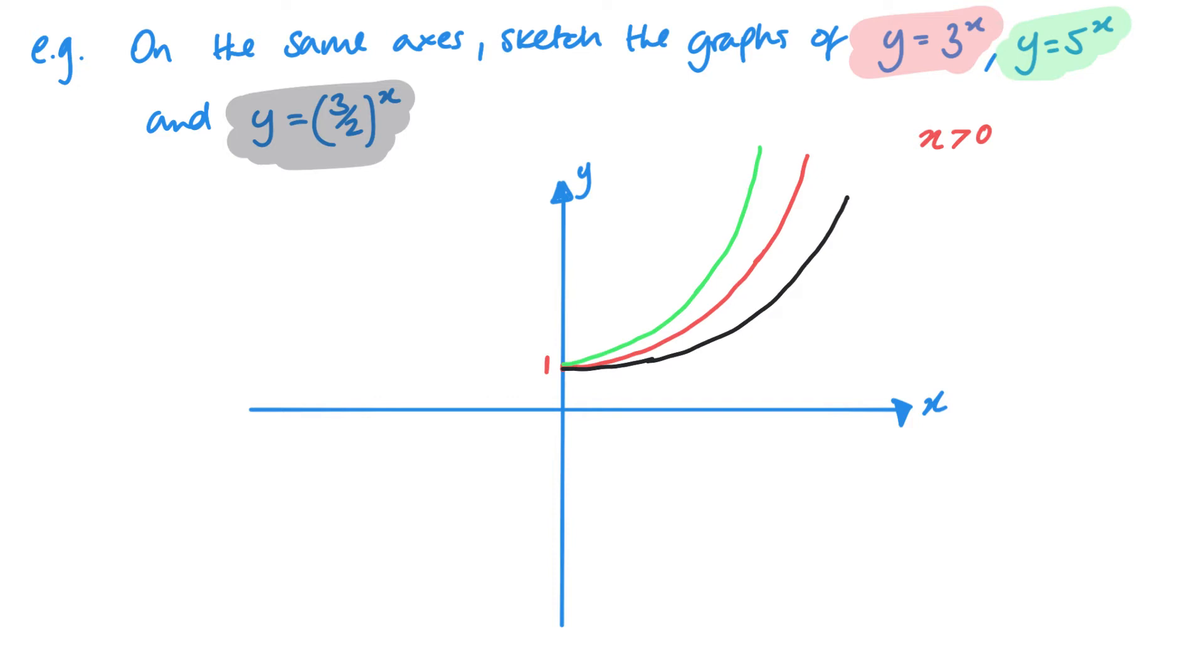When I look at where x is smaller than zero, so x being less than zero, what I find is that the opposite happens. If I pick a few values, say I had minus 1, then 5^x is 1/5, 3^x is 1/3, and 3/2 to the power x is 2/3. You can see that the smaller graph on the right-hand side is the larger one on the left-hand side.